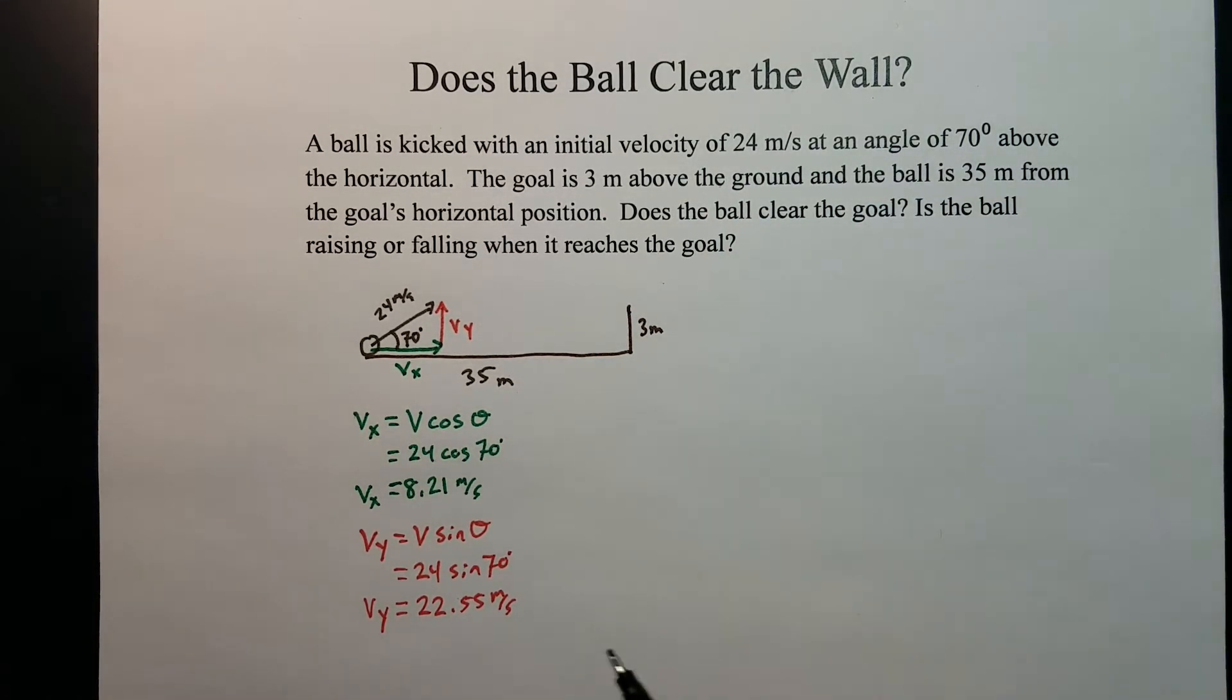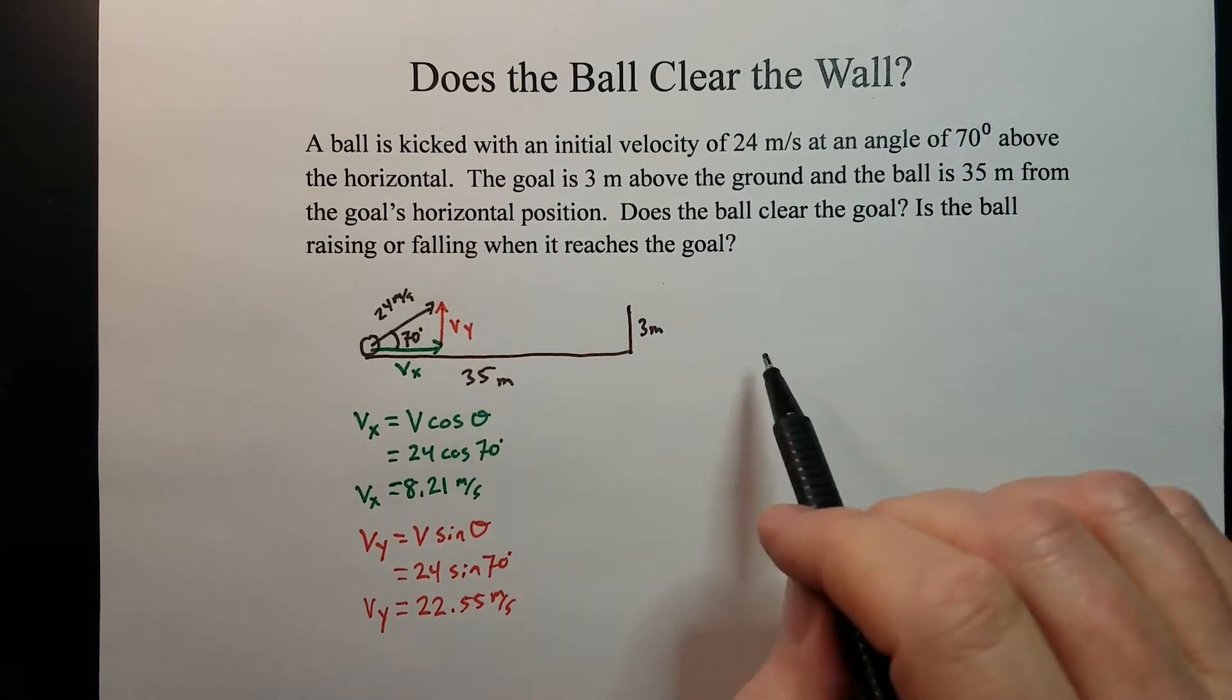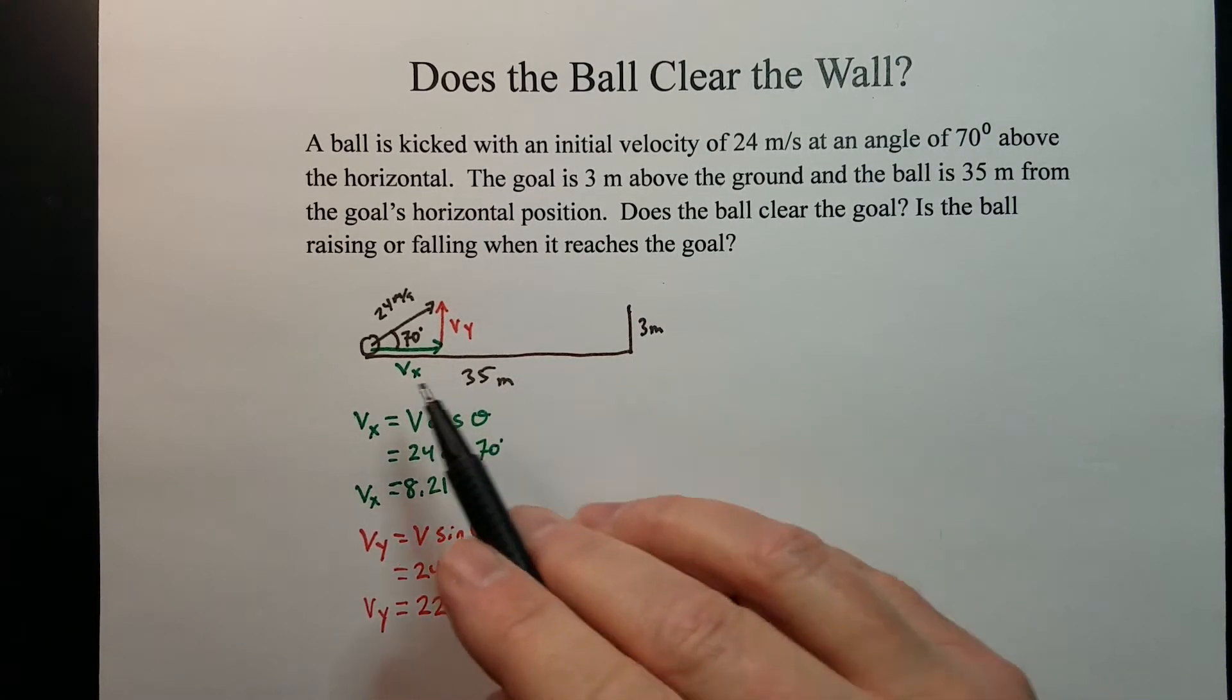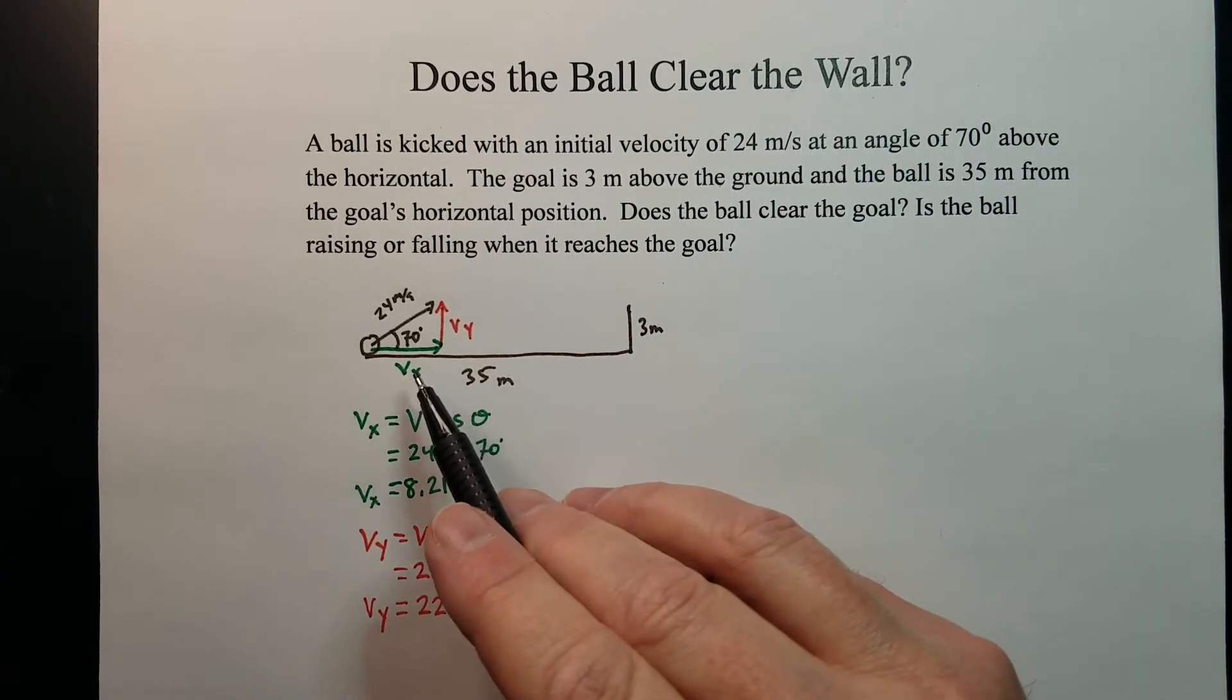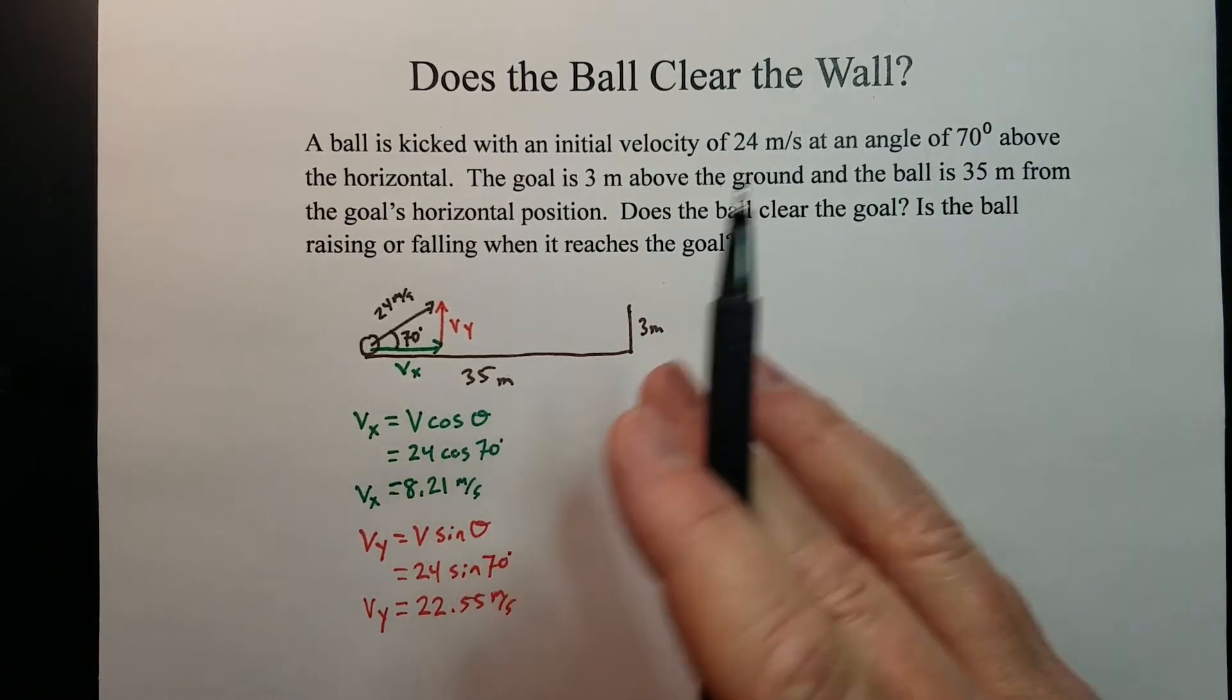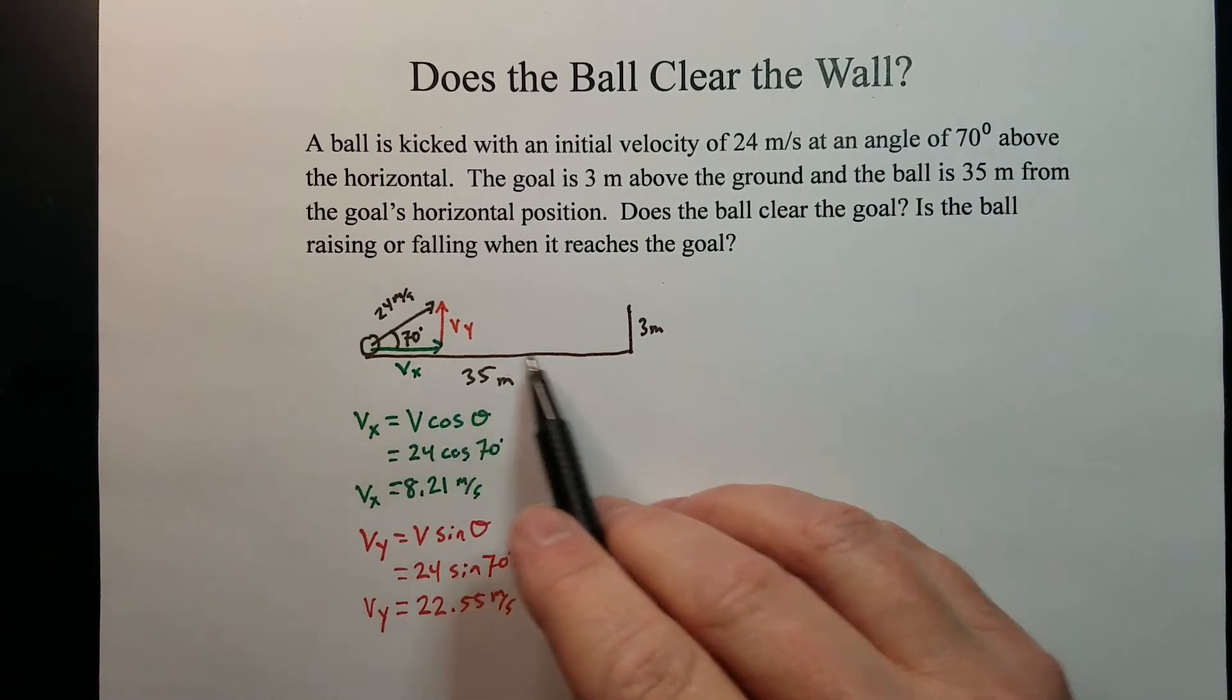Since we've got it separated into the horizontal and vertical pieces, now we need to figure out what's going on. Normally, we figure out the time of flight and the range. But in this case, we want to know what's happening 35 meters away. And so we need to figure out the time it takes for the ball to get there. The horizontal component is independent of the vertical component. As long as there's no air resistance or anything to affect that. So the motion sideways is constant.